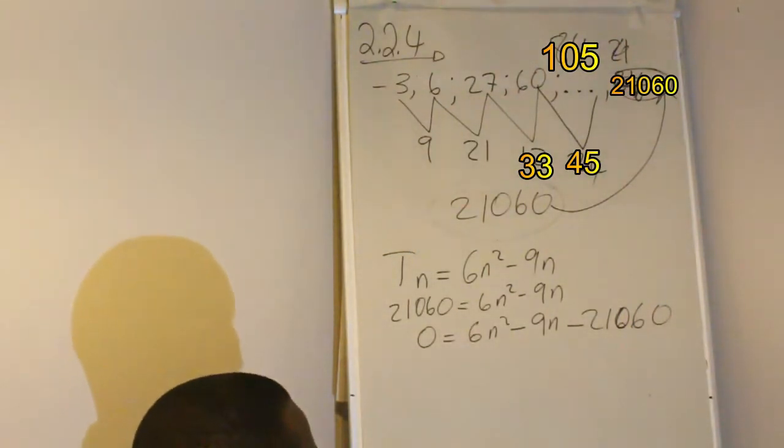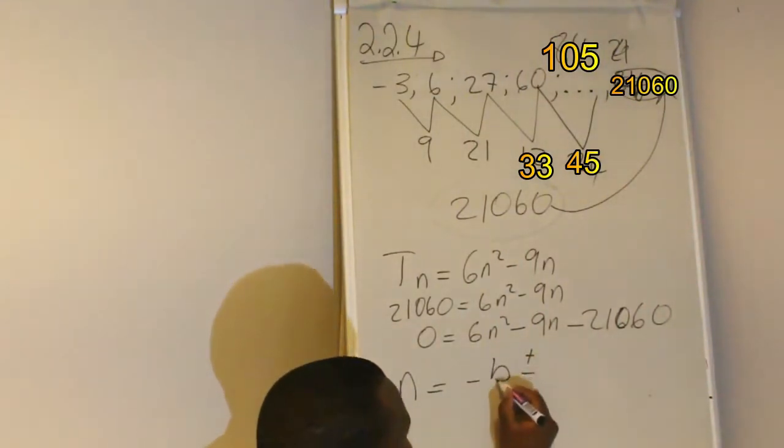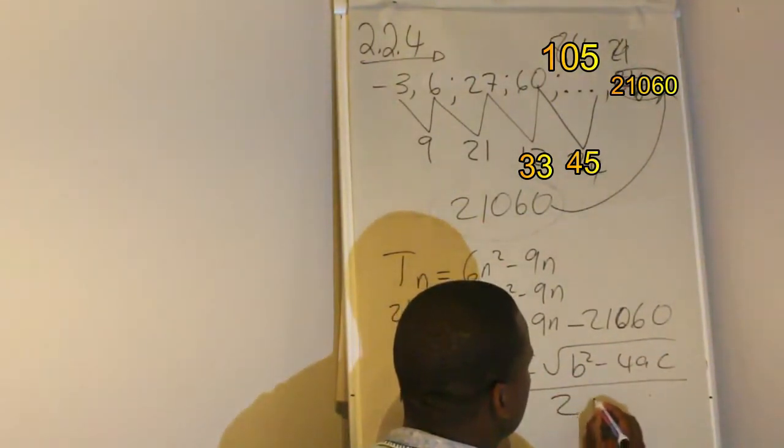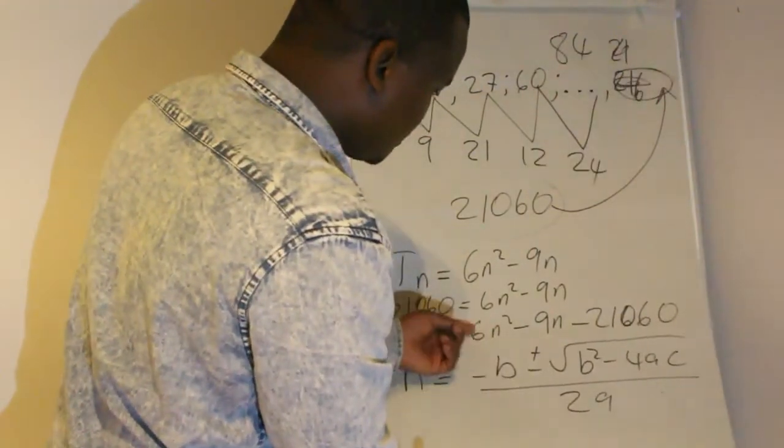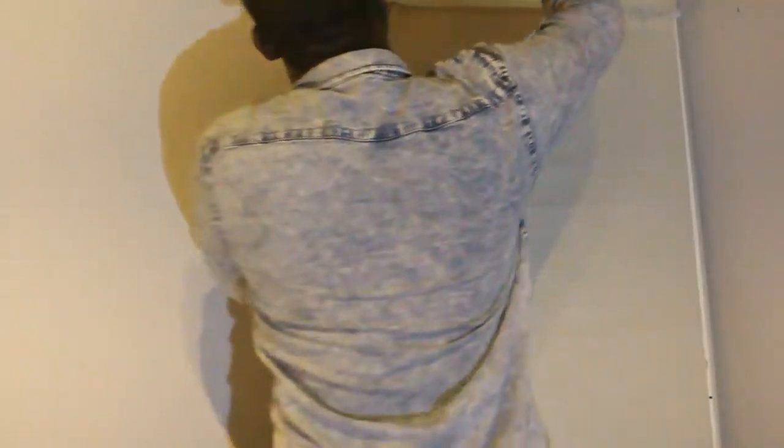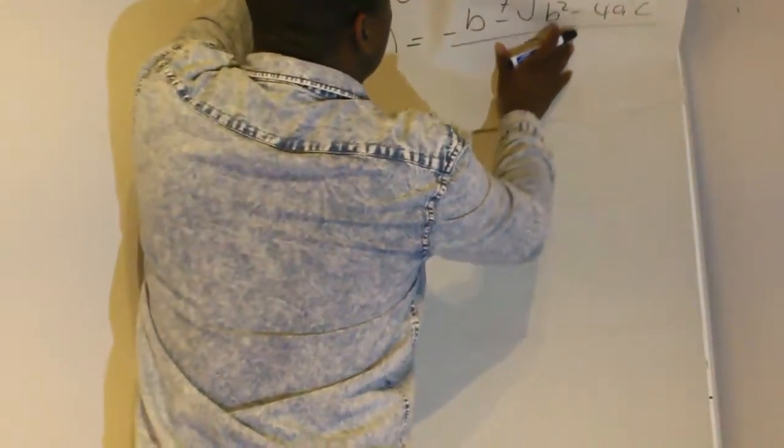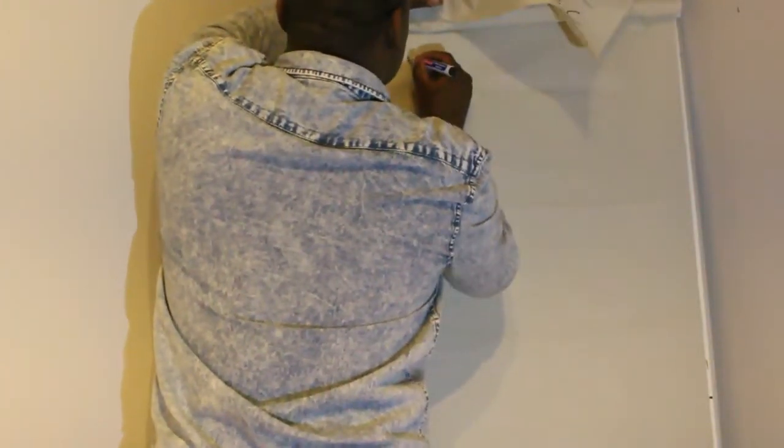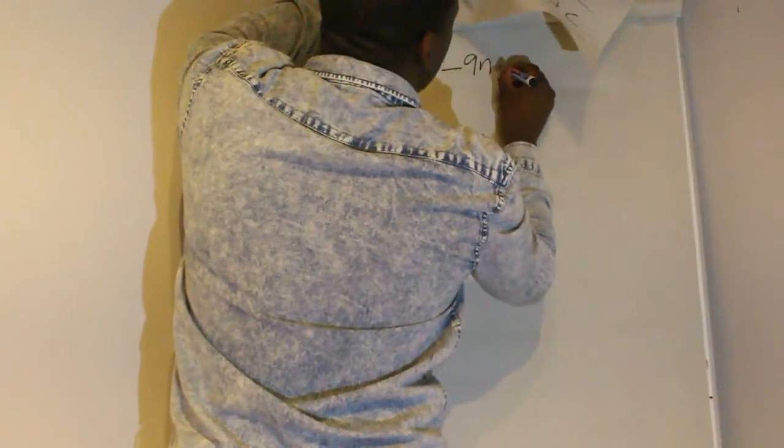So you have 0 is equal to 6m squared, which is transposed to this side, minus 9m minus 21,060. So you factorize this or use the quadratic equation. So n is equal to negative b plus or minus square root of b squared minus 4ac all over 2a.